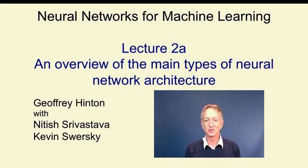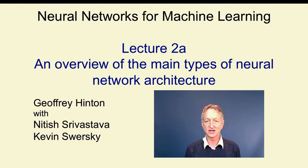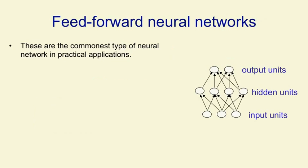Recently, however, people have made a lot of progress in training recurrent neural networks, and they can now do some fairly impressive things. The last kind of architecture I'll describe is a symmetrically connected network, one in which the weights are the same in both directions between two units.